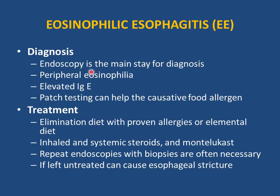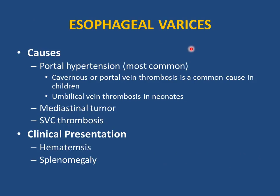Endoscopy with biopsy is the gold standard for diagnosis of eosinophilic esophagitis. Common lab findings include elevated eosinophils and elevated IgE. Food allergy testing is important to identify the causative agent. Treatment includes elimination diet, elemental diet, and inhaled or systemic steroids. Montelukast can help with inflammation, but stopping it may cause recurrence. Repeat endoscopies are often necessary. Untreated disease leads to stricture and food impaction.